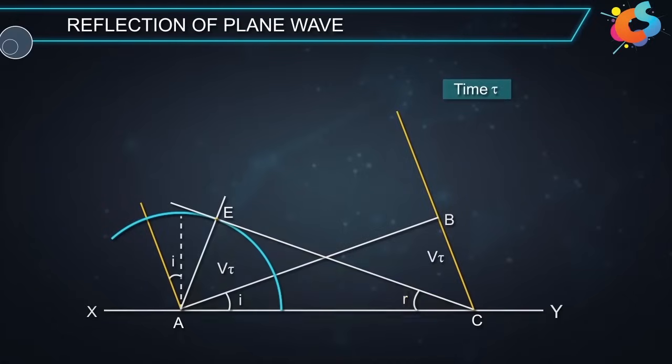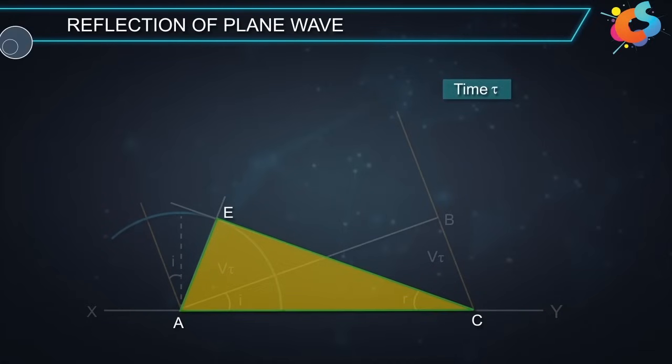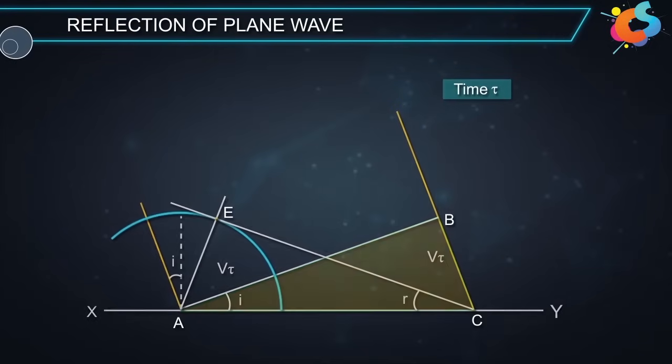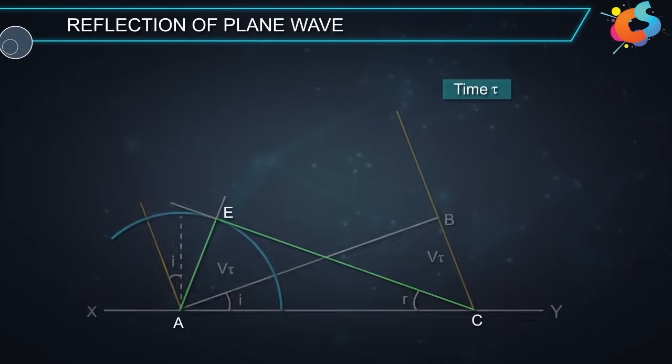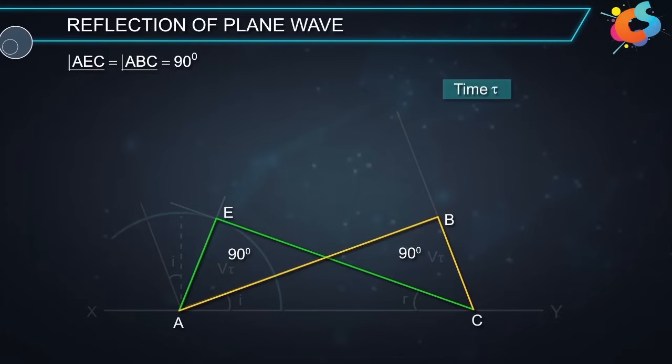From the triangles EAC and the triangle BAC, we have angle AEC is equal to angle ABC which is equal to 90 degrees.